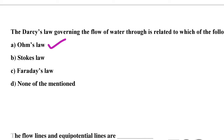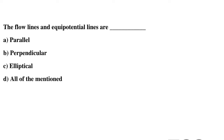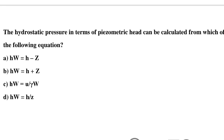Question 4: The flow lines and equipotential lines are — Option A: parallel, Option B: perpendicular, Option C: elliptical, Option D: all of the above. The correct answer is Option B: perpendicular.